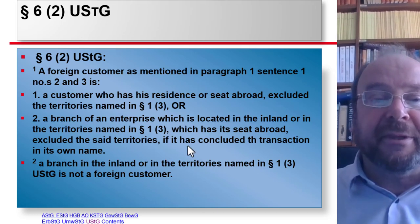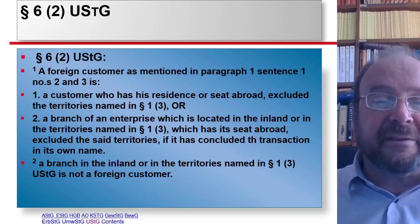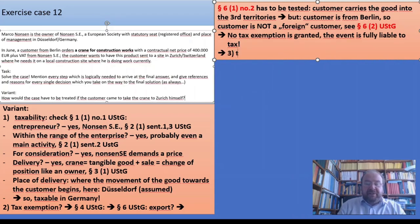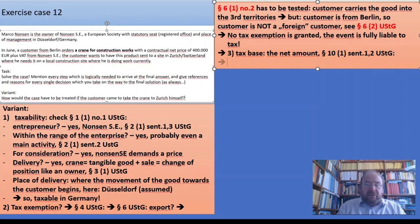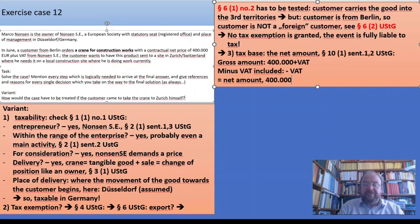Things are taxable. So the tax base, under §10(1) sentences 1 and 2, is everything you get minus the VAT amount. The gross amount here is, according to the contract, plus VAT, minus VAT included — so we have a net amount, not surprisingly, of 400,000.